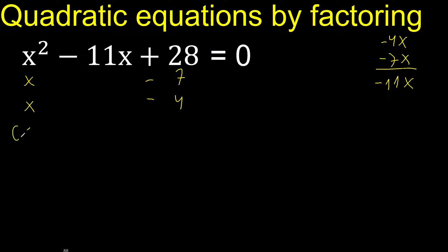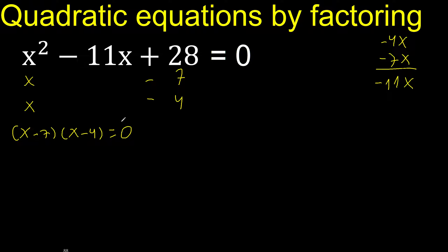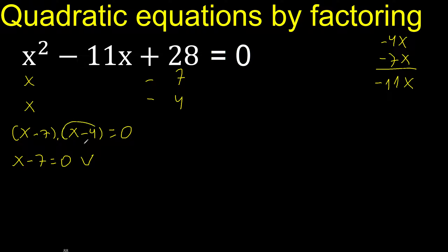Like this here — equal 0. With a multiplication equal to 0, therefore this factor equals 0 or this factor equals 0.